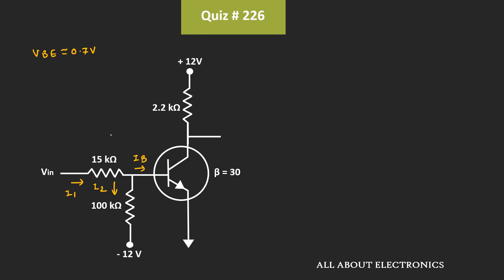As we are assuming that the transistor is operating in the active region, the voltage Vb will be approximately equal to 0.7V. And since the emitter terminal is grounded, Vb will be equal to 0.7V. That means the voltage at this node will be equal to 0.7V. Applying KCL at this node, we can write I1 = Ib + I2, which means Ib = I1 − I2.